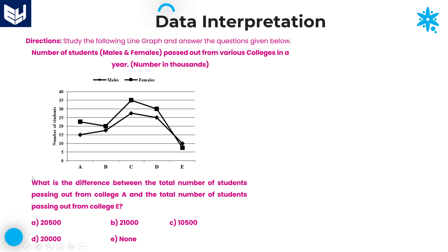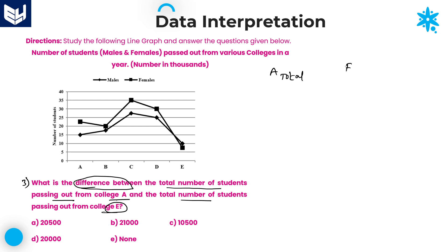The third question: what is the difference between the total number of students passing out from college A and the total number of students passing out from college E? We need college A total minus college E total. College A: females are 22,500 and males are 15,000.